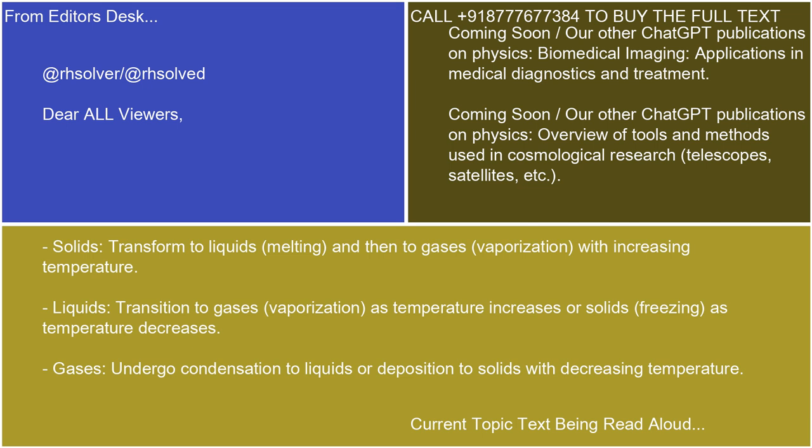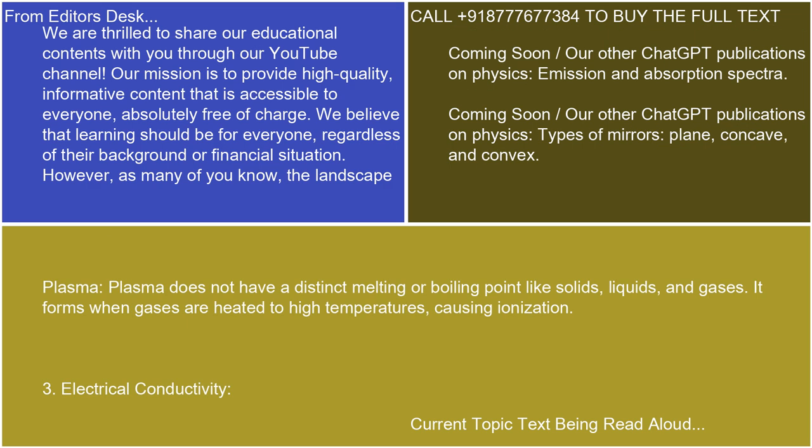Liquids: Transition to gases (vaporization) as temperature increases, or to solids (freezing) as temperature decreases. Gases: Undergo condensation to liquids or deposition to solids with decreasing temperature. Plasma: Plasma does not have a distinct melting or boiling point like solids, liquids, and gases. It forms when gases are heated to high temperatures, causing ionization.